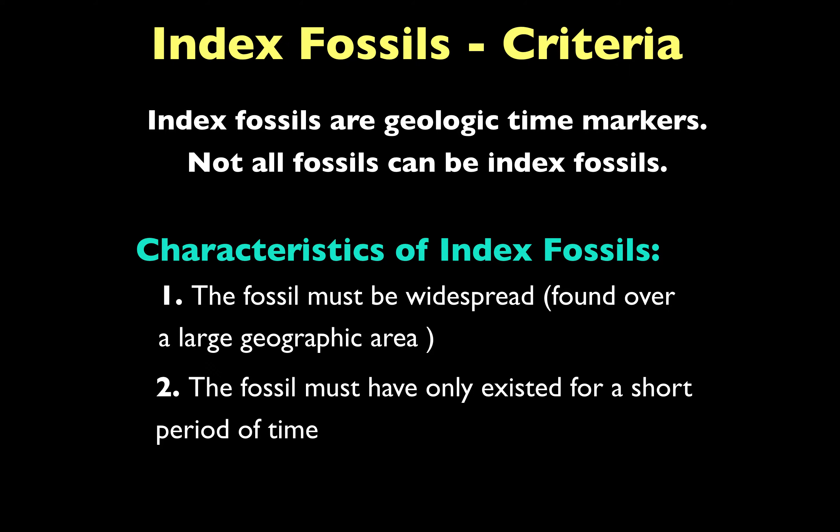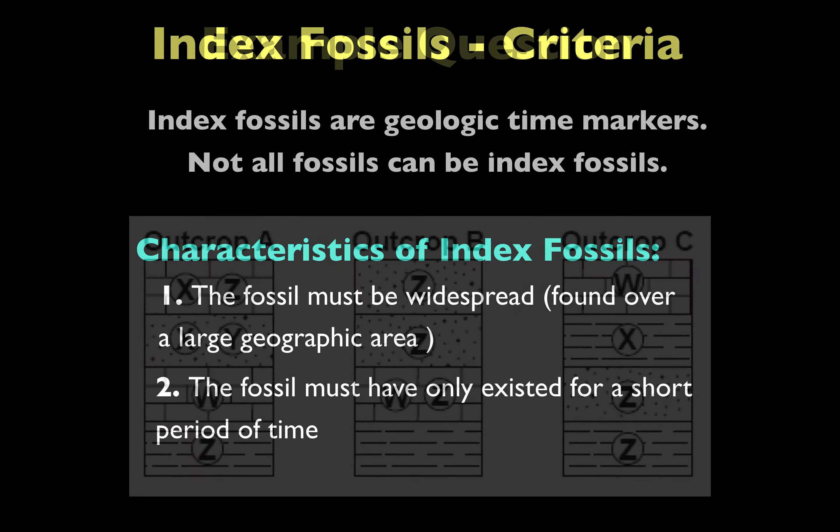Our best example of future index fossils are actually going to be humans. Humans are found all over the world — we're found on every single continent, so we are definitely widespread and cover a large geographic area. And in the grand scheme of things, humans have only existed for a really short time in Earth's history. So those are the two characteristics of an index fossil.